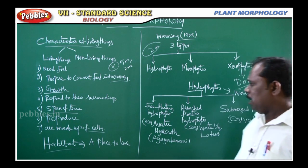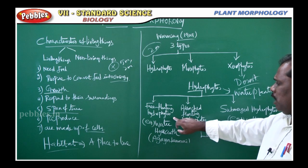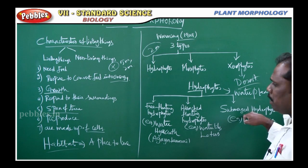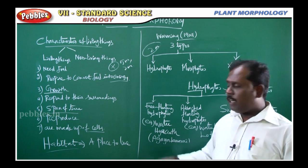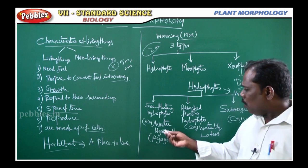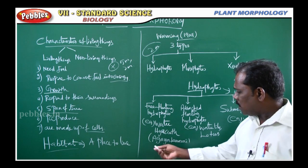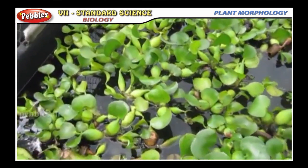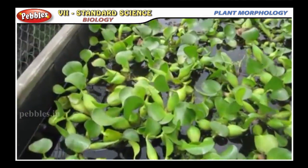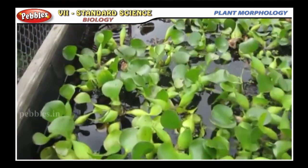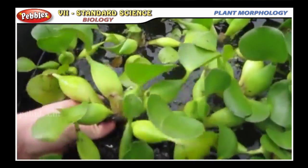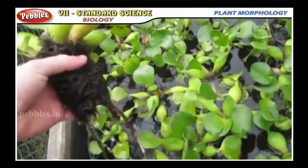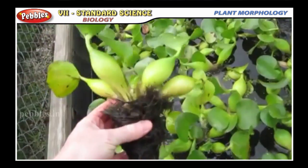There are three types of hydrophytes: free floating hydrophytes, attached floating hydrophytes, and submerged hydrophytes. An example of free floating hydrophytes is water hyacinth — also called Agai thamarai. These plants float freely on the water surface, as shown in the water hyacinth diagram.